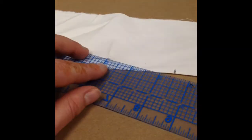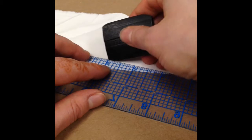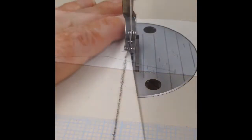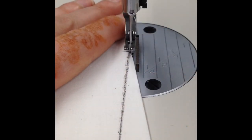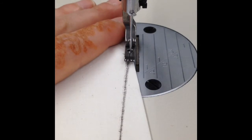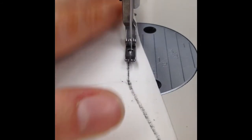Connect the two lines. At your machine, lower the needle into the top of the dart. Stitch.